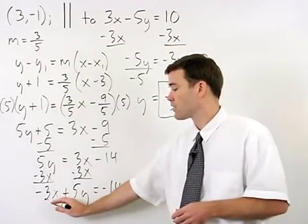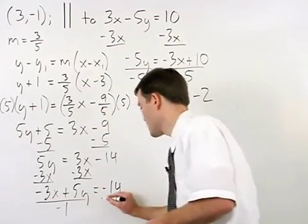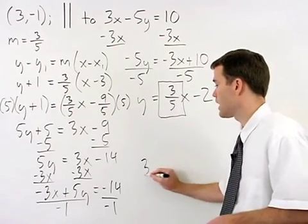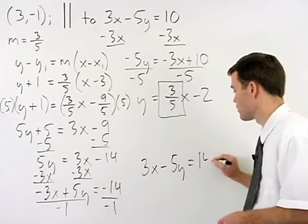Finally, make the coefficient of your x term positive by dividing both sides by negative 1. And our final equation reads 3x minus 5y equals 14.